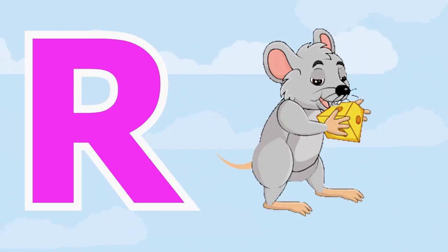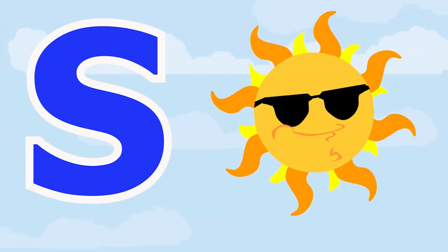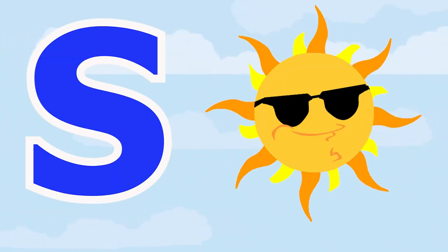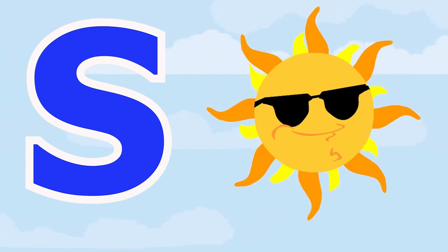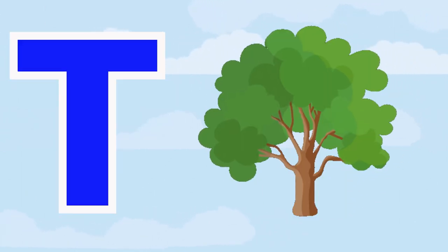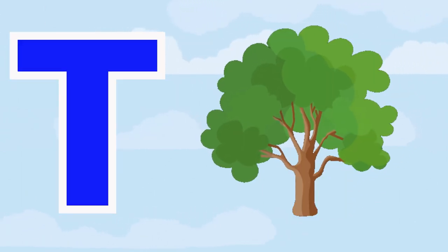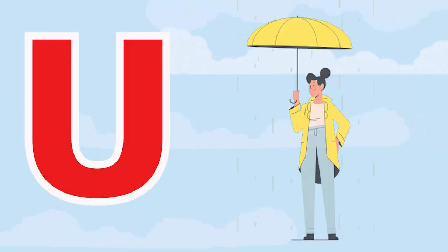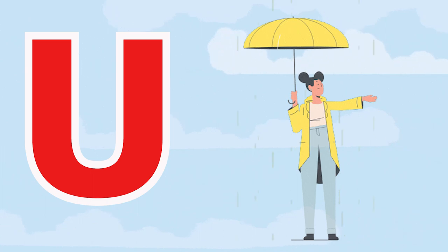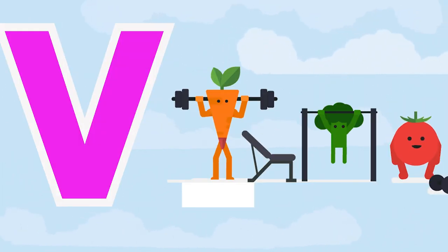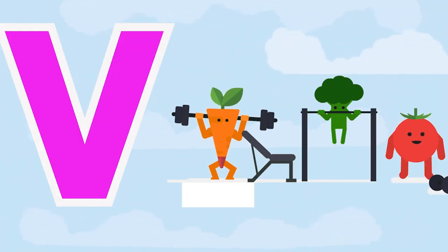R for rat, S for sun, T for tree, U for umbrella, V for vegetable.